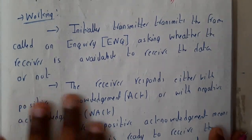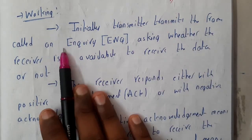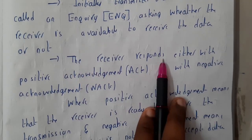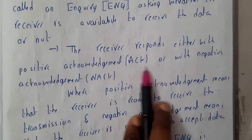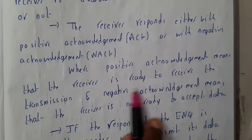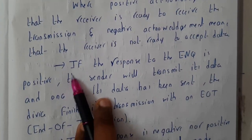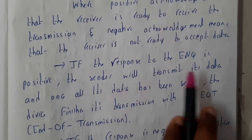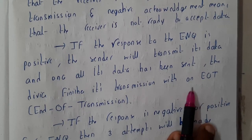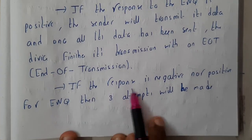The transmitter — our first device — sends a frame called Enquire, asking whether the receiver is ready to receive the data or not. The receiver responds either with positive acknowledgement (ACK) or negative acknowledgement (NACK). Positive acknowledgement means the receiver is ready to receive the transmission; negative acknowledgement means it is not ready. If the response to the enquire is positive, the sender starts sending data, and once the data is sent, the device finishes with EOT — End of Transmission.